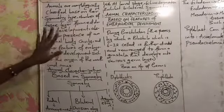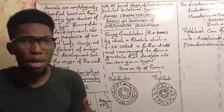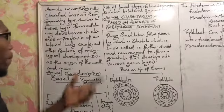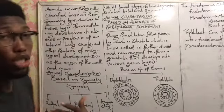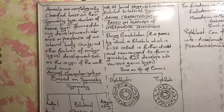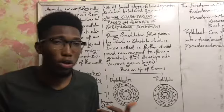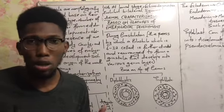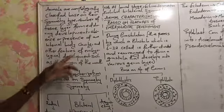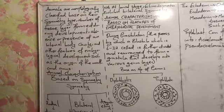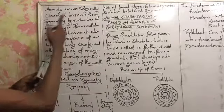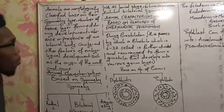We also have the number of tissue layers formed during development — I will be explaining the process called gastrulation in one of our videos so you can understand the formation of these tissue layers. We also have the absence or presence of an internal body cavity. Those body cavities we actually call the coelom during the development process.